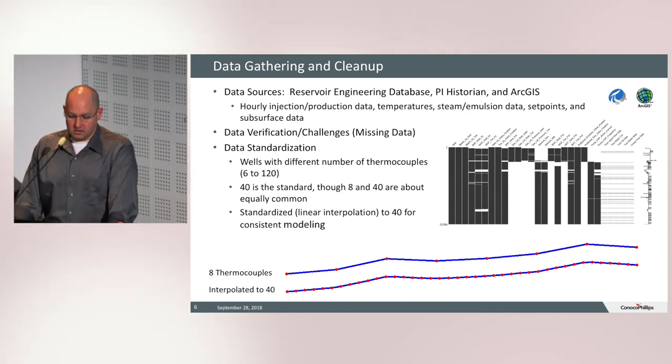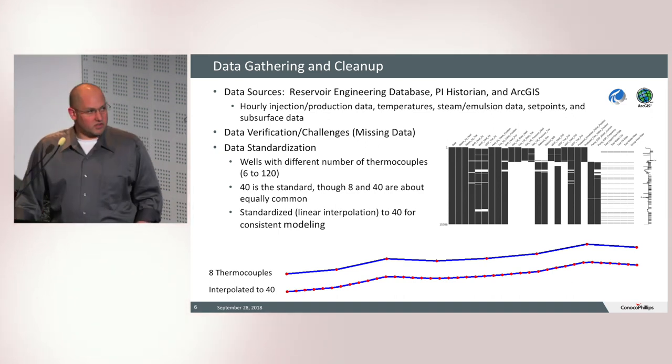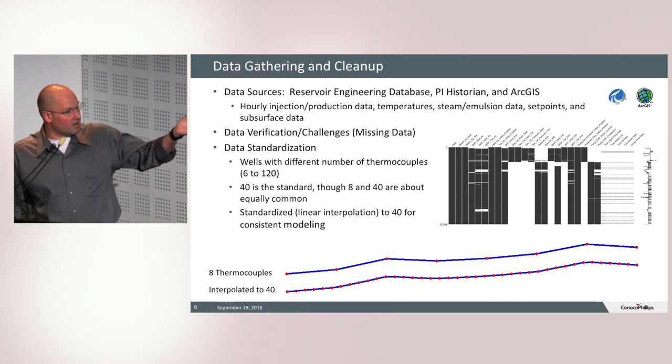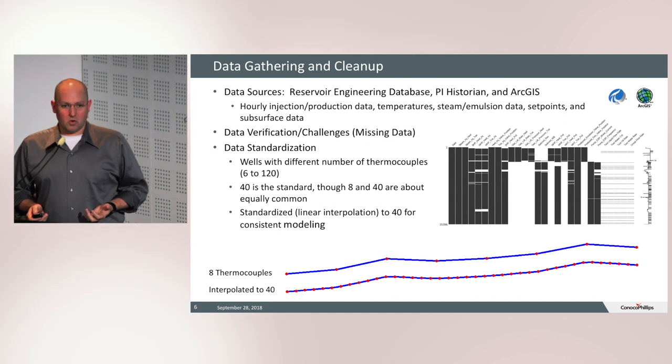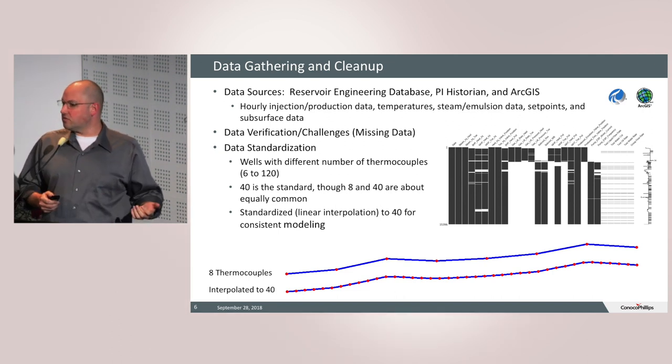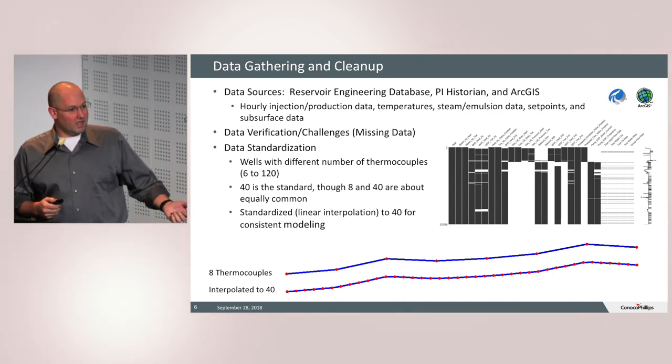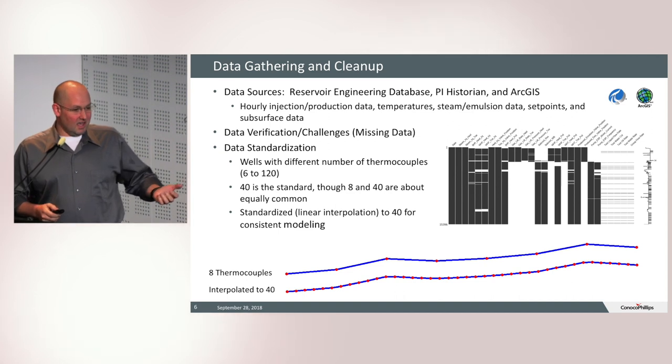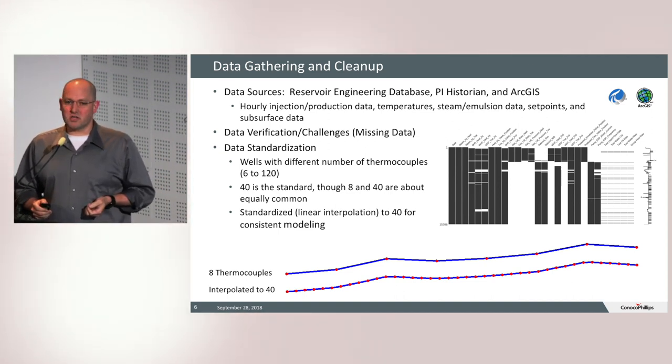So pulling the data out, all this hard data, we pulled it out of three different databases. We pulled some subsurface information out of our ARC databases, historized production data out of our PI Historian, and also other parameters out of our internal database. We chose to go with hourly average production data. Here's an example of one well pair's history, what we were looking at, about how many holes and patches that were in there. So this required quite a big effort. When we're dealing with steam injection, we are concerned with temperatures, and some of the hardware configurations have changed over time. None of this would have been possible if we did not have a close working relationship with the subject matter experts out there in the field. That is a critical part to doing any data science project.